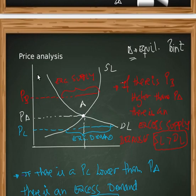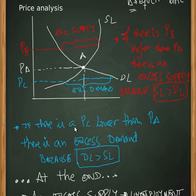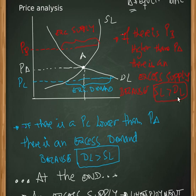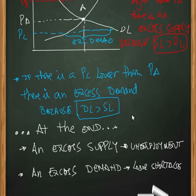Analyzing several types of prices in the market, we can see two situations. If we have PB — a price higher than the equilibrium price — there is an excess of supply. If we have PL — a price lower than the equilibrium price — there is an excess of demand, because demand is higher than the salary level. In the first situation, excess of supply leads to unemployment; in the second situation, excess of demand leads to a labor shortage.